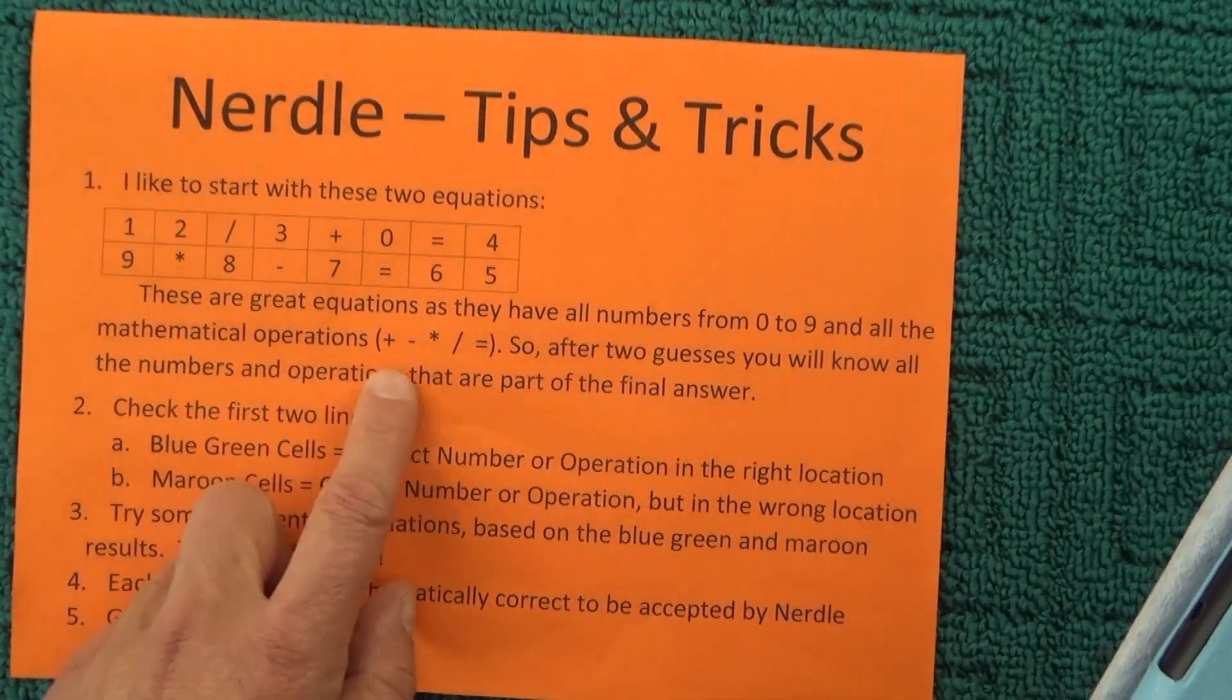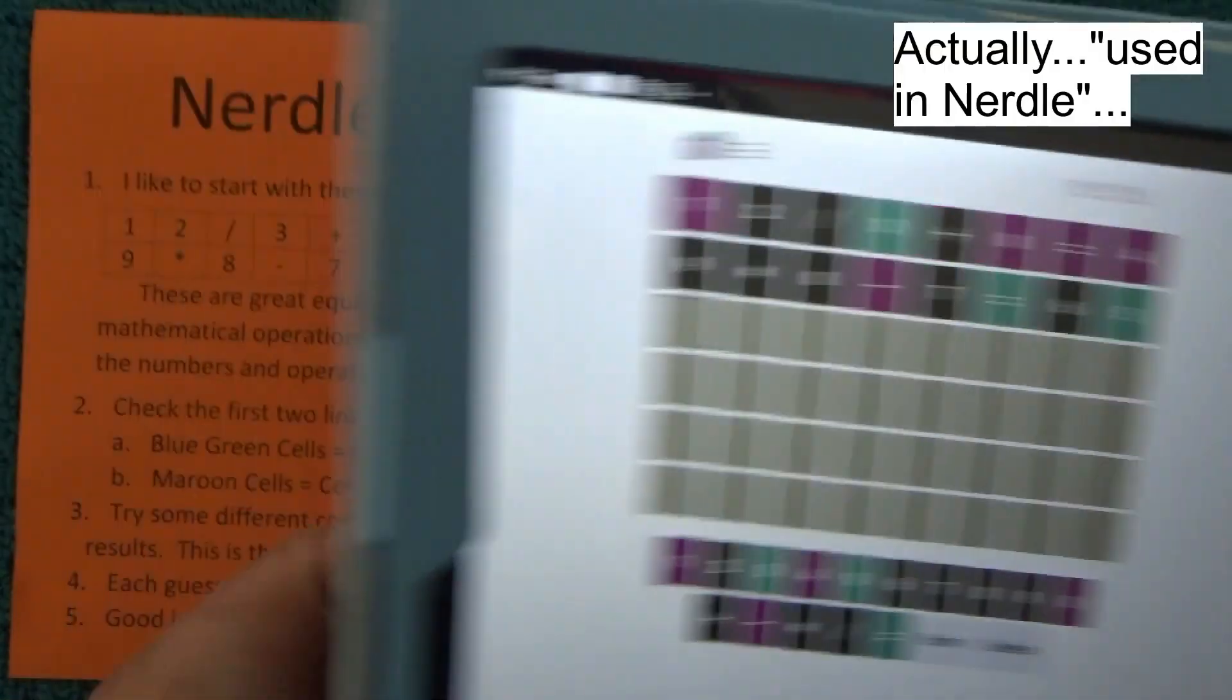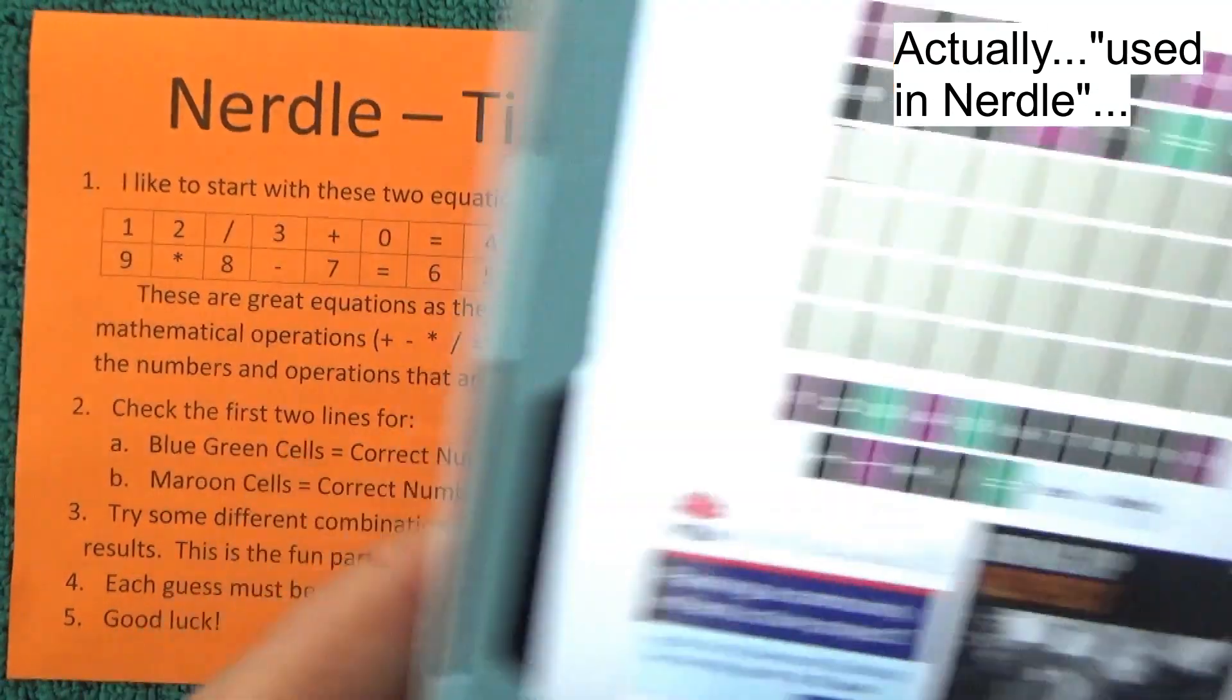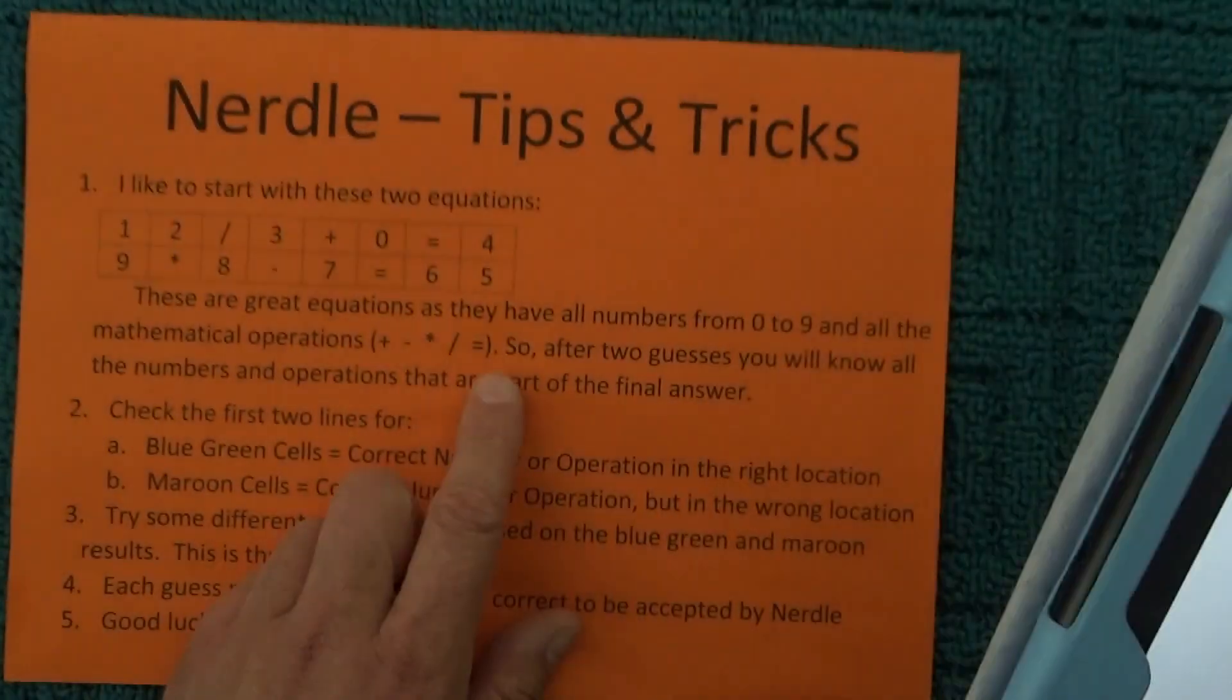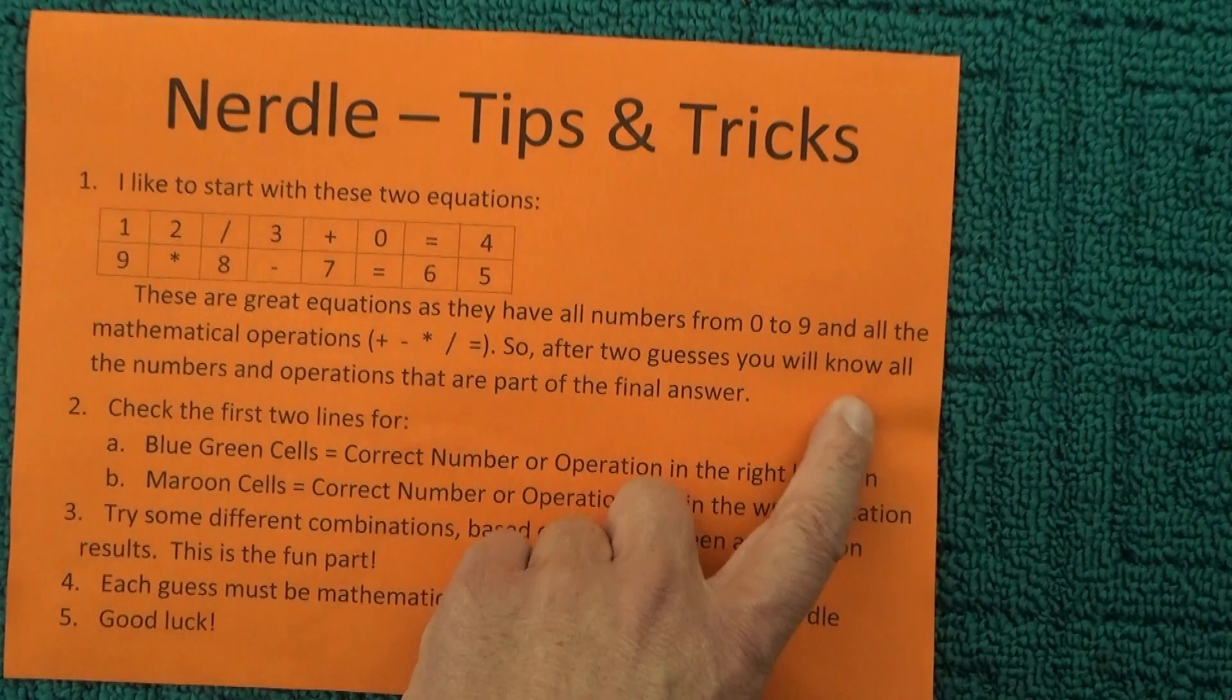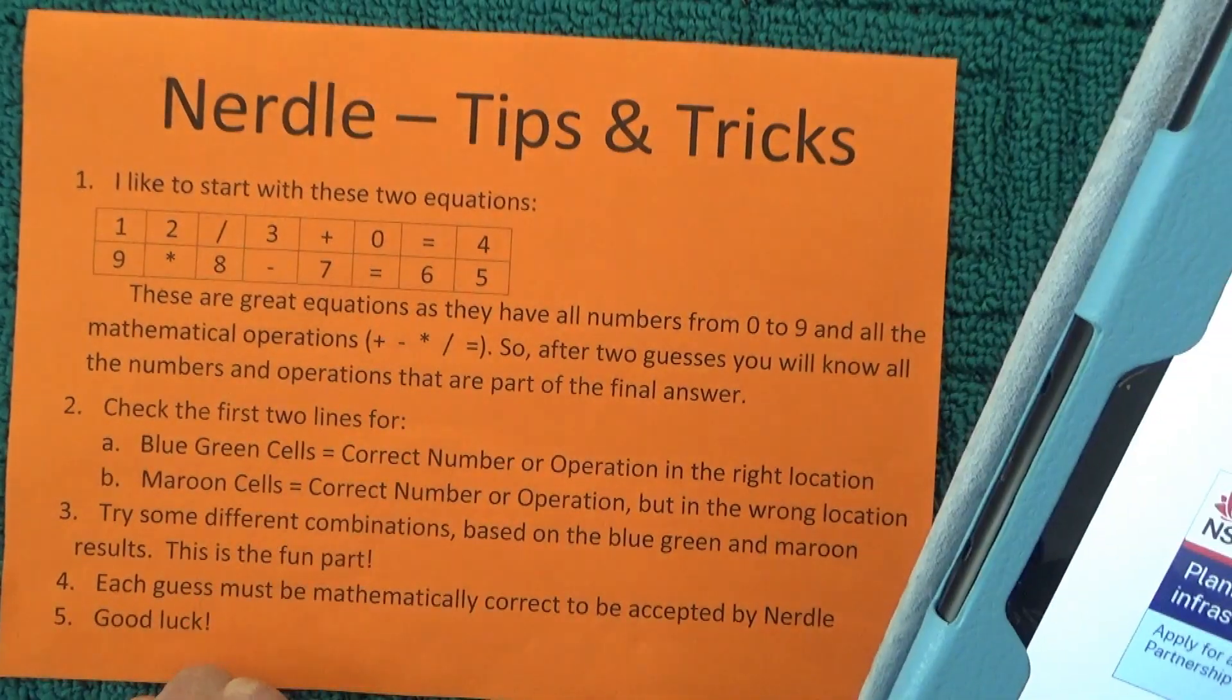And they also use all the mathematical operations that are used in Nerdle, which is plus, minus, multiply, divide, and also equals. And so you've got it all there. So these are really great. So after two guesses, you'll know all the numbers and operations that are part of the final answer.